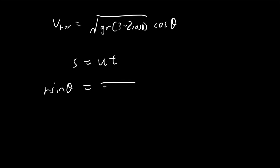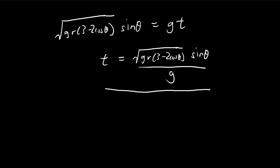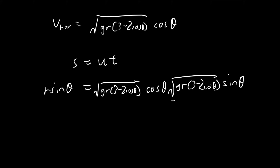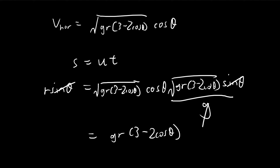Substituting the expressions, horizontal velocity times time equals R sine theta. The sine theta terms cancel out on both sides. The two square root expressions are the same and can be simplified, and the g and r terms cancel from both sides. This leaves us with the simplified condition involving cosine theta that we need to solve.